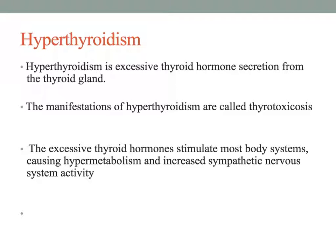Now we're going to switch gears and talk about hyperthyroidism, which is a common clinical condition characterized by the excessive secretion and synthesis of one or both of the thyroid hormones — T3 and T4. Thyrotoxicosis is a term typically used interchangeably with hyperthyroidism, referring to a condition where the thyroid gland is producing an overabundance of thyroid hormones. The excessive thyroid hormone effects on body tissues result in alterations in growth, metabolism, and development, and sometimes patients are mistaken for having a psychiatric illness.